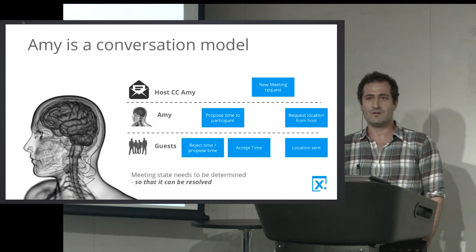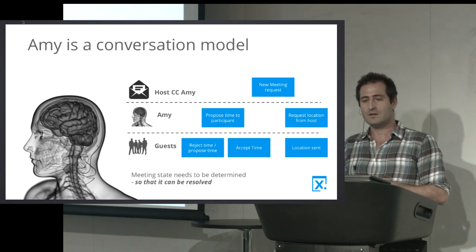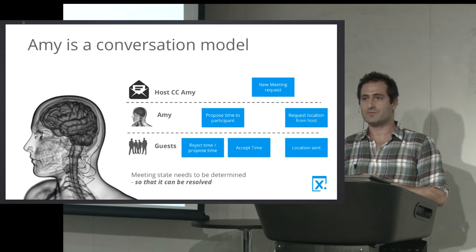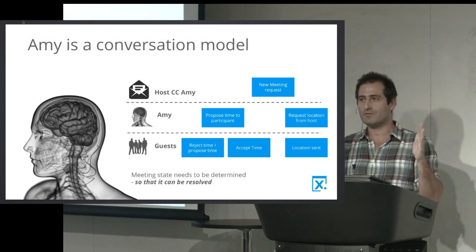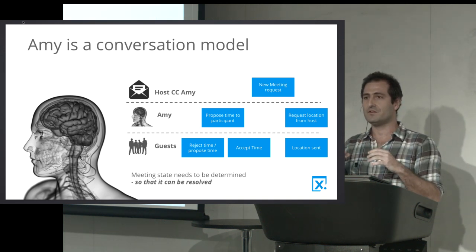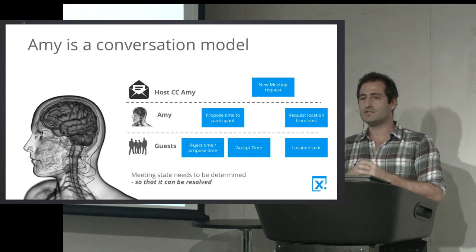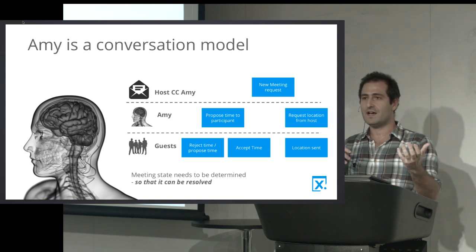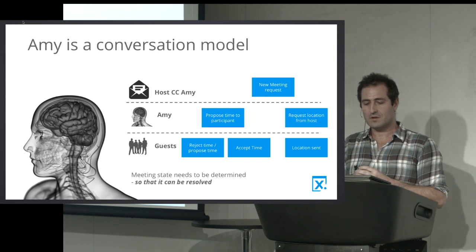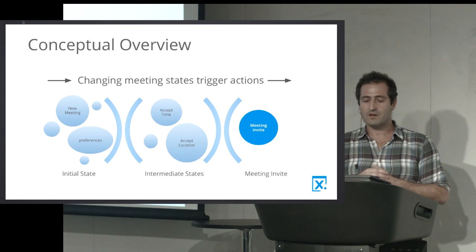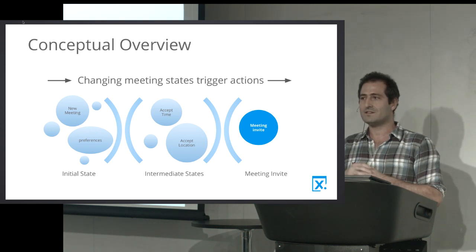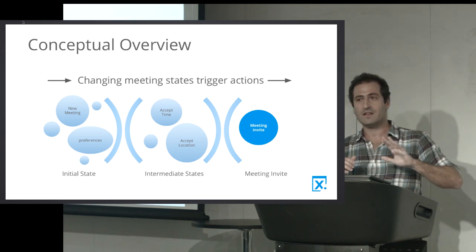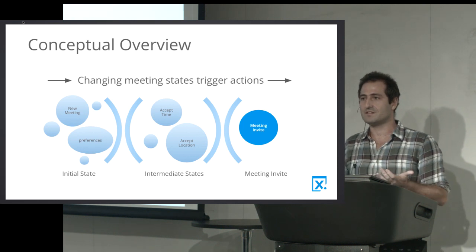You can think of Amy as a conversation model. The entry point is an email requesting a meeting. Amy first needs to recognize what that email is about, extract information, and understand what the meeting scenario is — what information we have and what we don't. Once Amy understands the meeting scenario, she takes an action, such as sending an email to each participant. The conversation continues until the meeting is resolved. We think of it as a change-of-state system: once we know the scenario, we don't care about how we got there — it becomes deterministic.